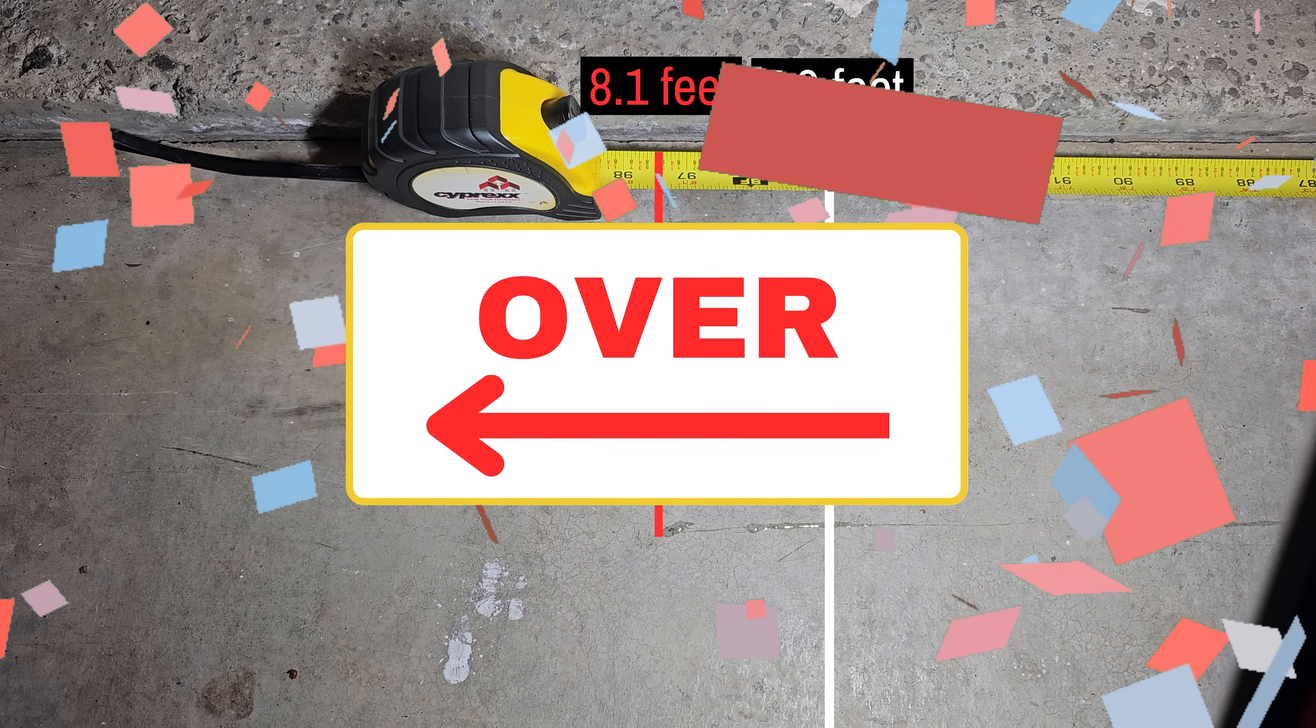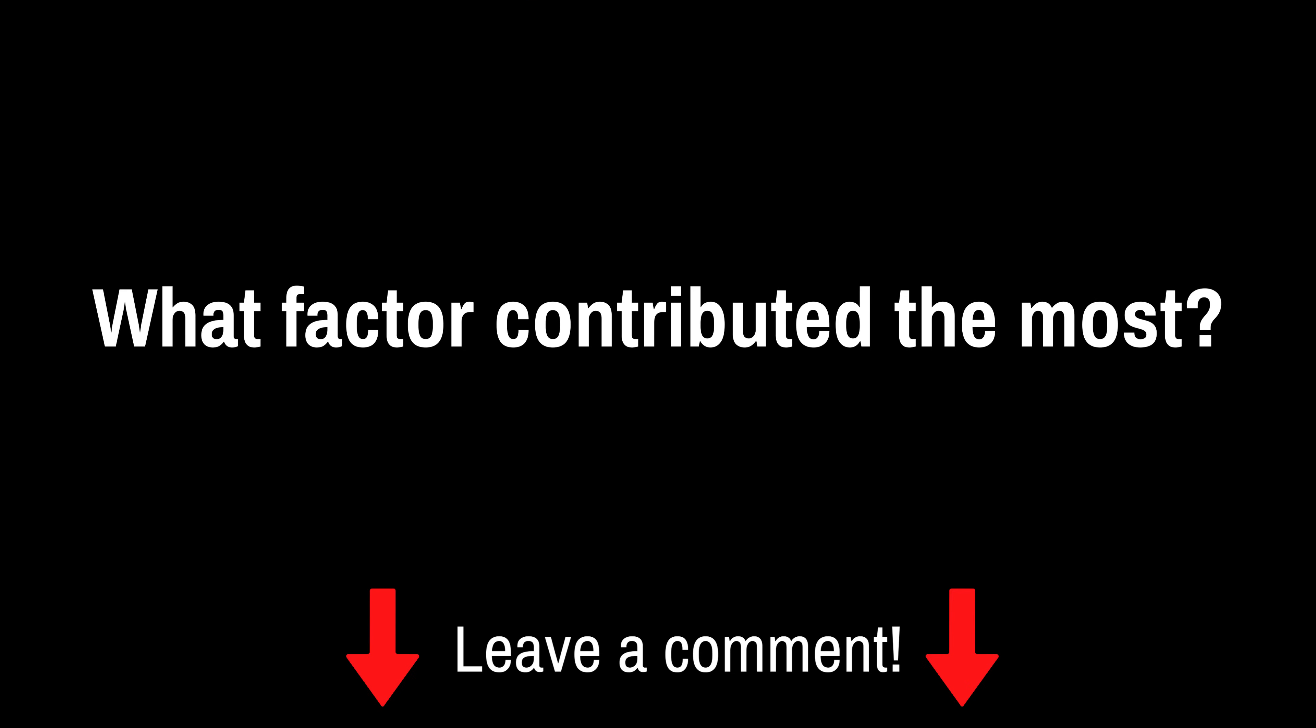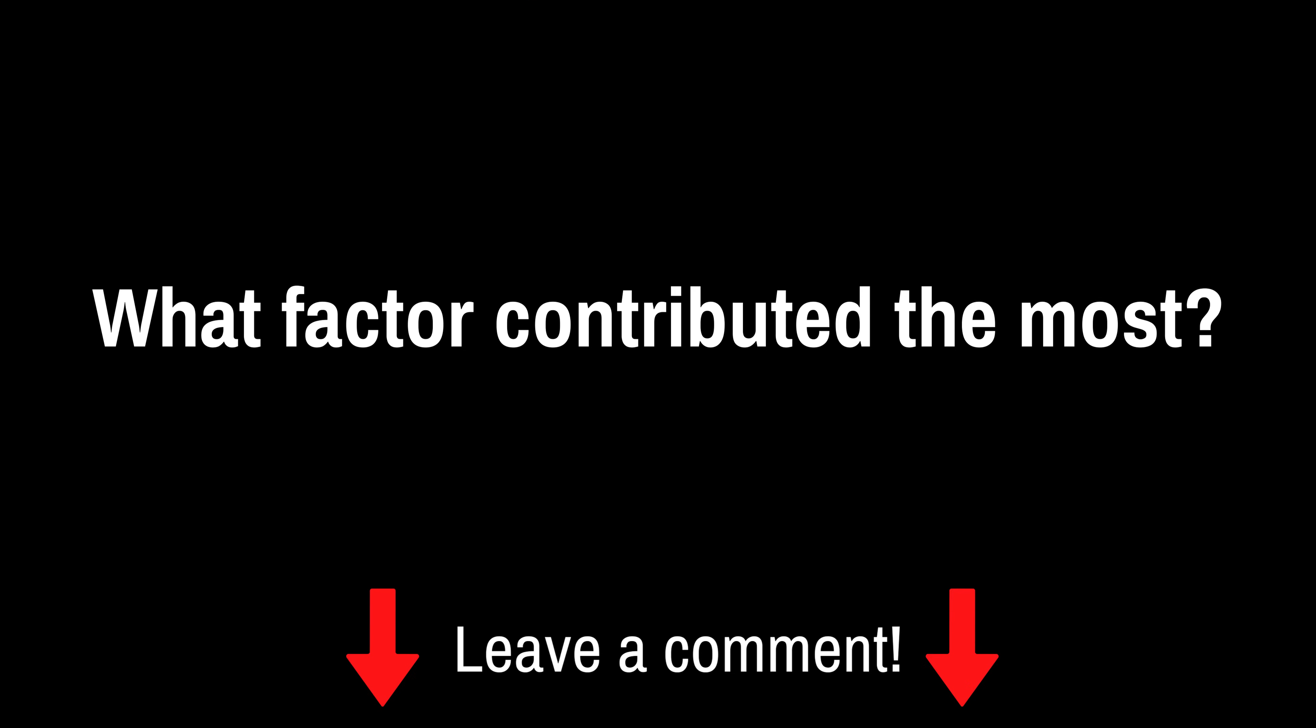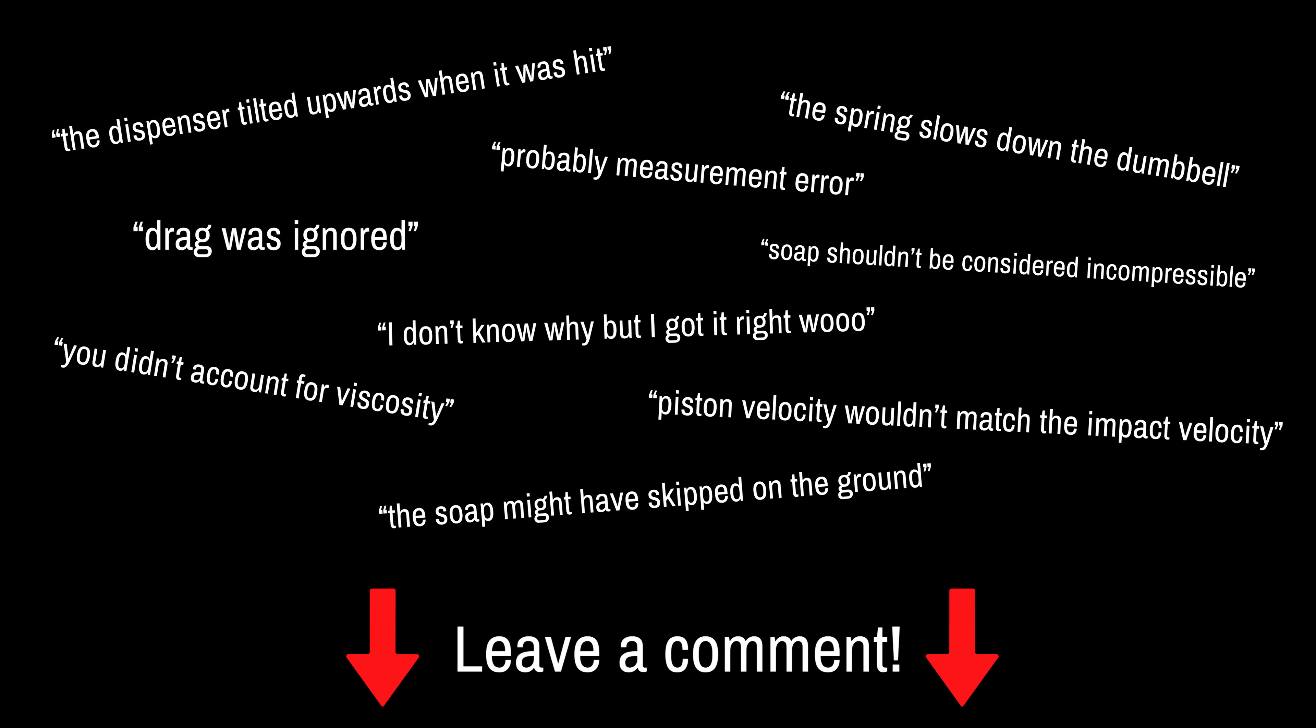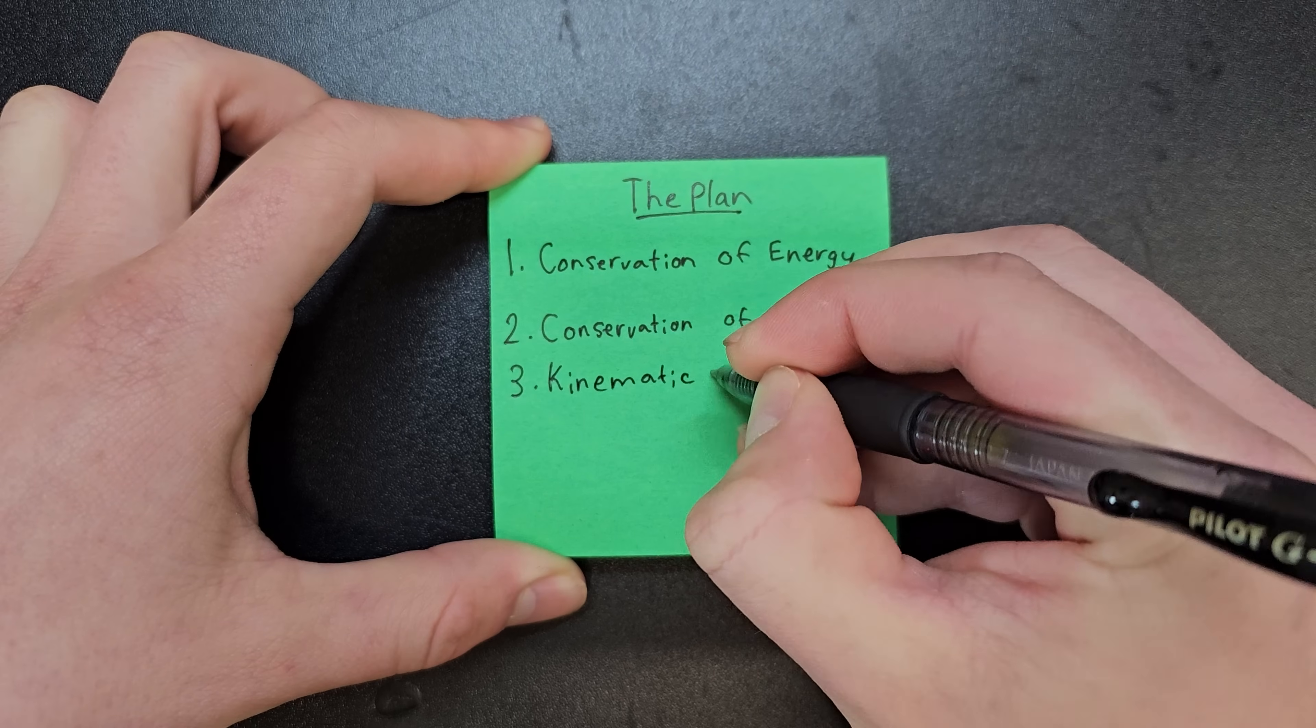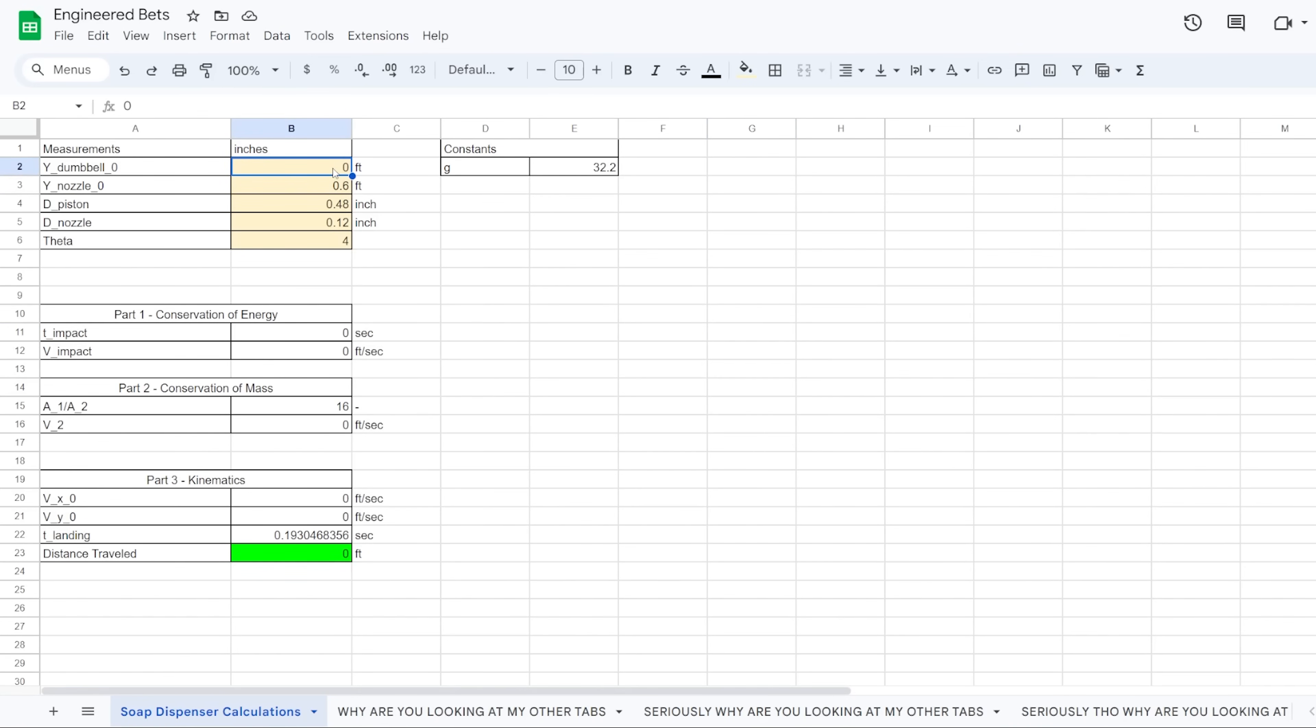Congrats to those who got it right. Personally, I took the under, so I got it wrong. Let me know in the comments which factor you think contributed the most to it being over. Also, just so you know, I lock in the methodology for the prediction before doing the experiment, and then just plug in any missing measured values later to get the line, regardless of how close or how far off that line is. Thanks for watching to the end, and I'll see you next time.